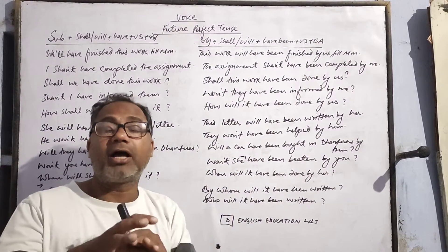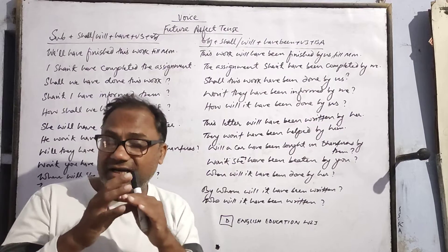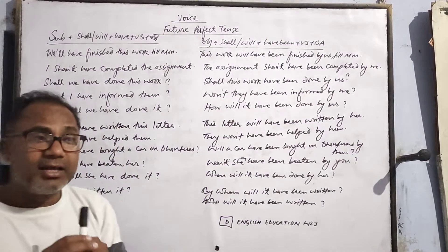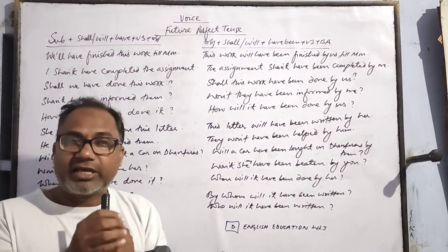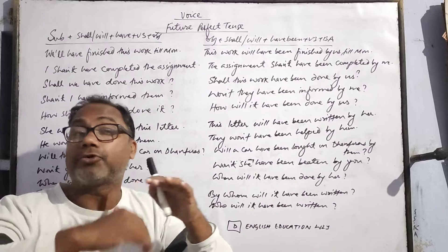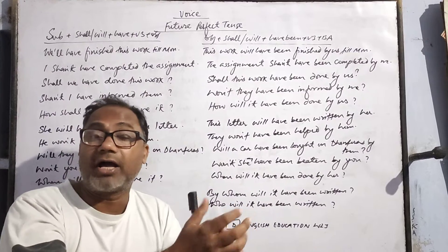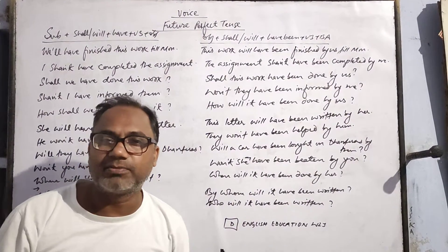कोई काम किया गया होगा, ये किया जा चुका हो — future certain time में। आप कोई काम कर चुके होगे, ये किया होगा — ये active। और वोही काम को किया गया होगा, ये किया जा चुका होगा — that is passive.